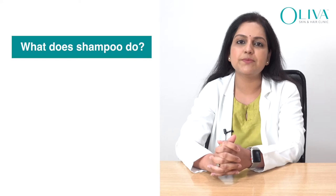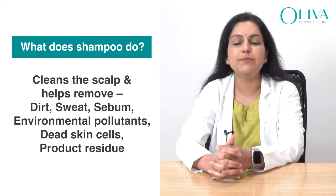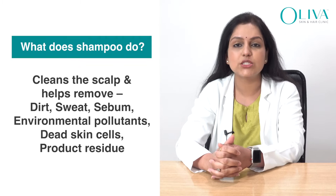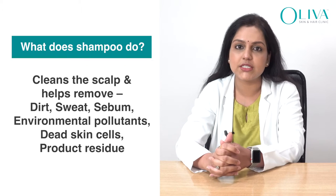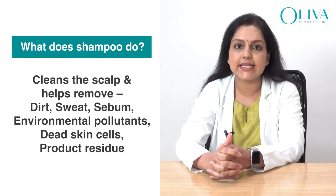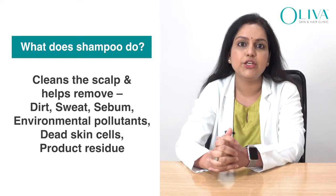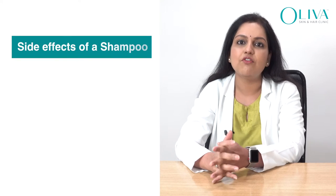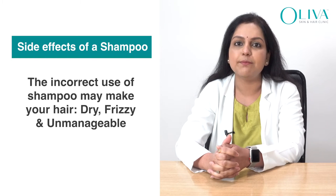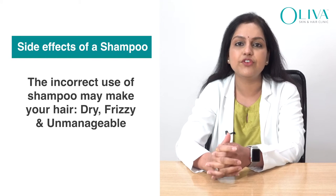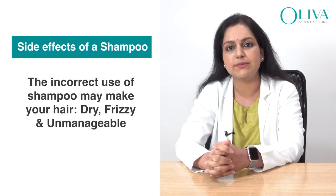The primary purpose of a shampoo is to clean the scalp and help you get rid of dirt, sweat, sebum, environmental pollutants, dead skin cells, and any other residue from hair care products you use before the wash. While shampoos clean your scalp effectively, they might leave the hair dry, frizzy and unmanageable due to the removal of sebum.